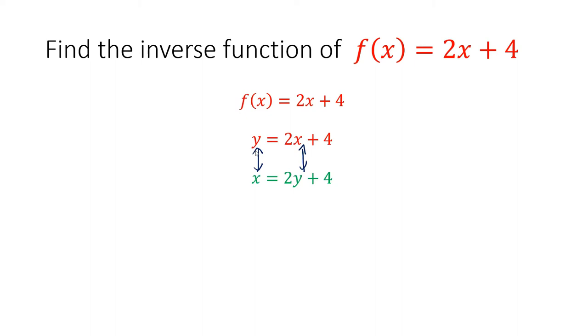First, remove the 4 to the left by subtracting 4, and we get x - 4 = 2y. Next, get rid of the 2. The 2 is being multiplied to y, so the opposite is divide by 2 both sides. And we get (x - 4)/2 = y. So the inverse function, inverse of f(x), is equal to (x - 4)/2.